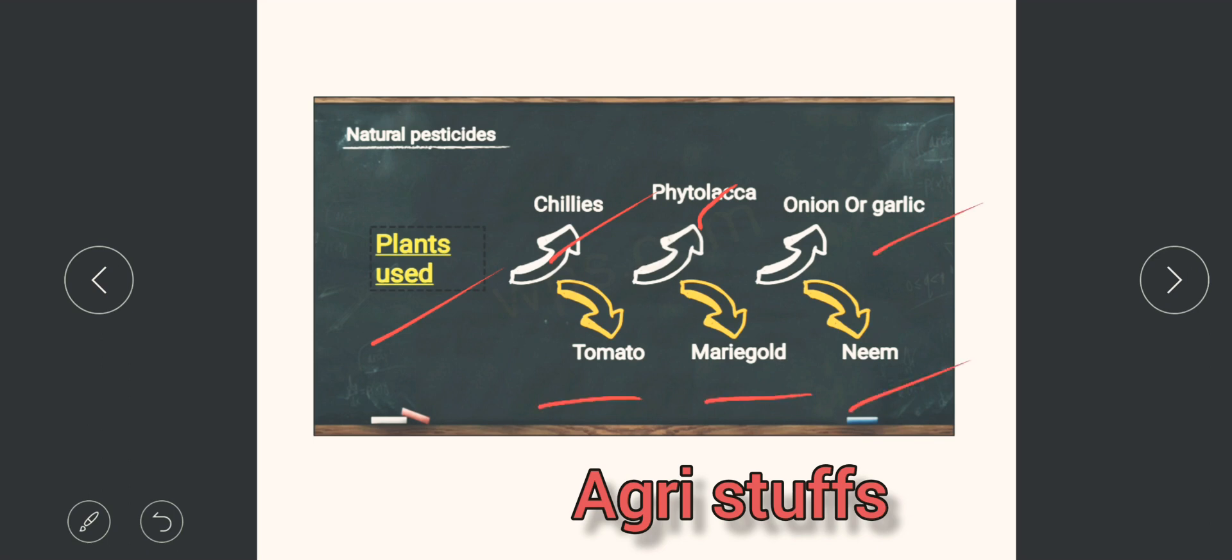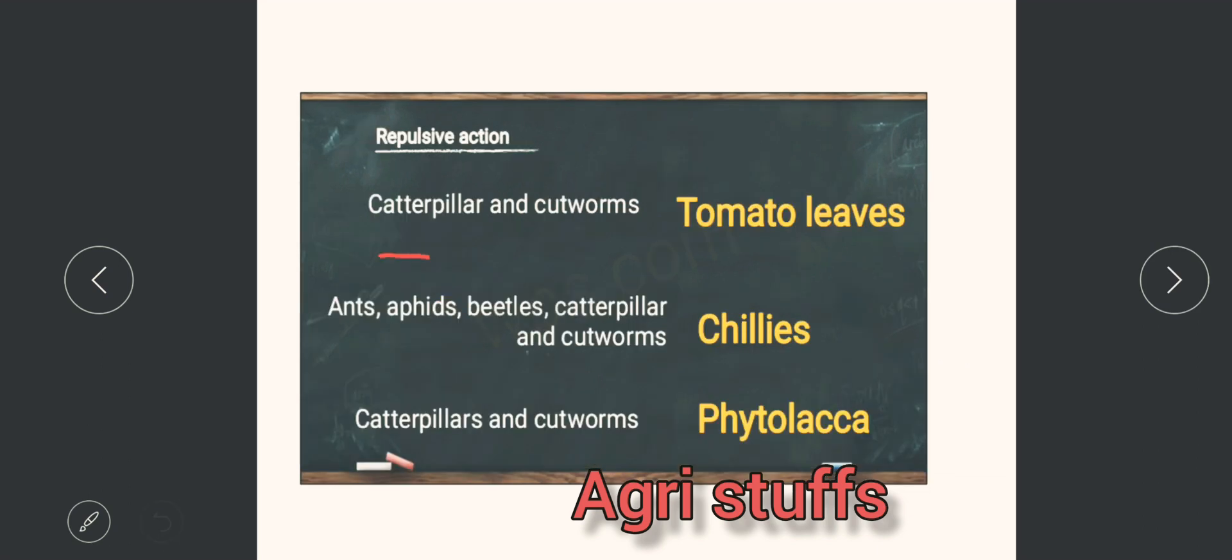marigold and neem. So the repulsive action includes caterpillar and cutworms for tomato leaves, ants, aphids, beetles, caterpillar and cutworms for chillies.